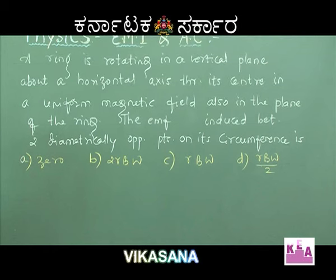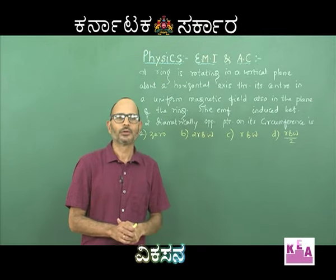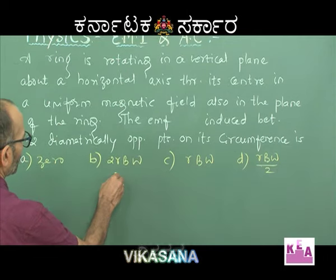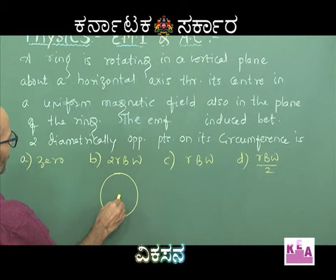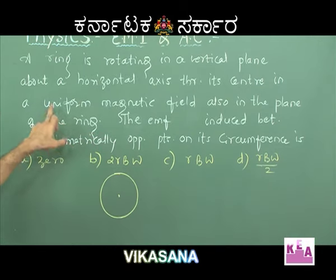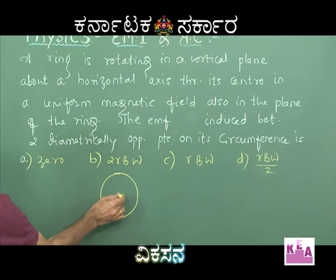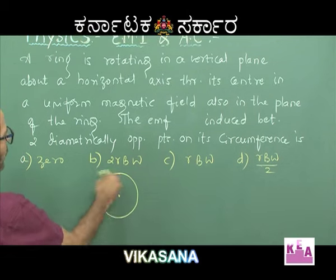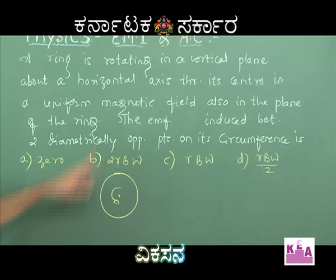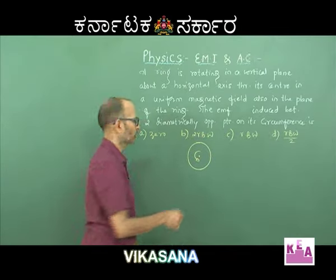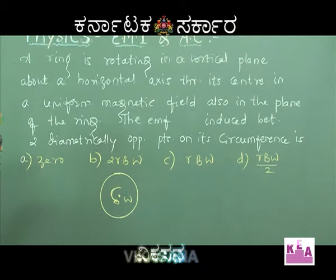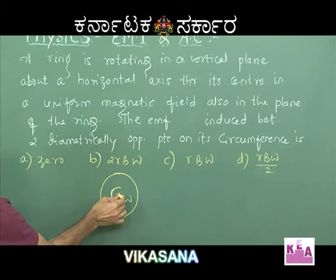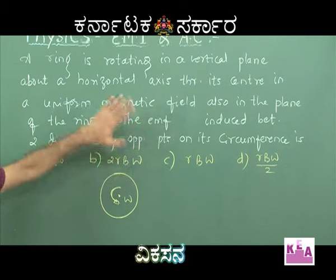Whenever we approach any rotational motion problem, you should be very particular about the axis and the plane of rotation. Here the ring is rotating in a vertical plane about a horizontal axis through its center — so the axis is passing through the center and parallel to the floor. He has not stated clockwise or anticlockwise; we will imagine anticlockwise with angular velocity omega. The axis is perpendicular to the plane of the ring.